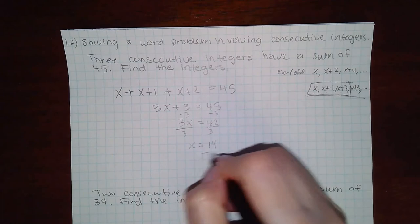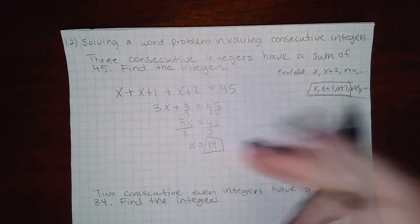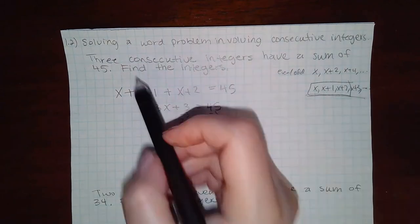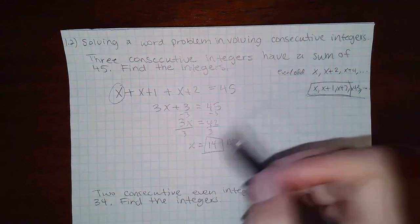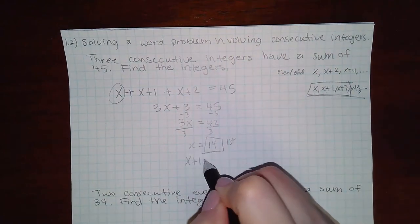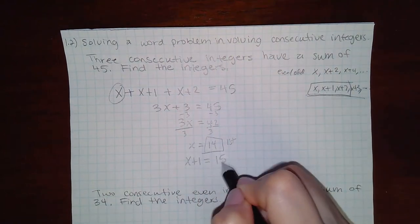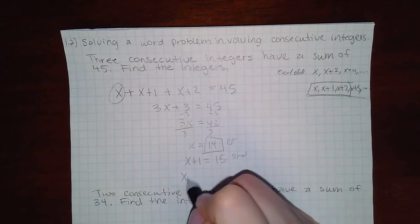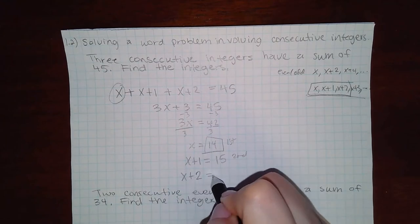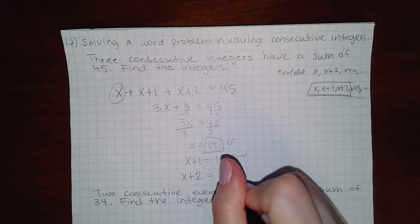That's the first number because the first is represented by x, the second is x plus 1, the next page number, and then x plus 2 which would be 14 plus 2 which is 16 and that would be the third one.